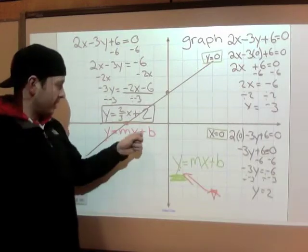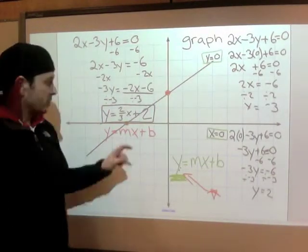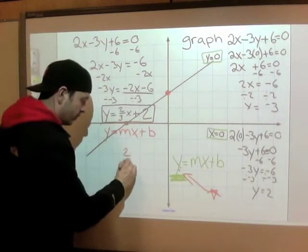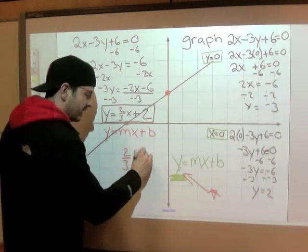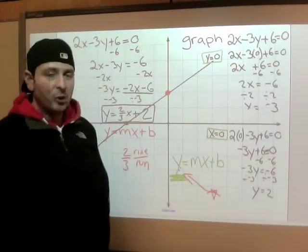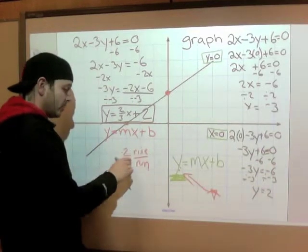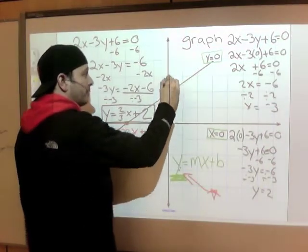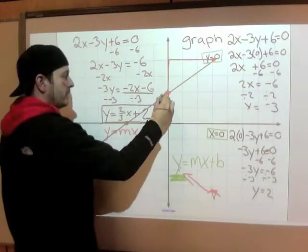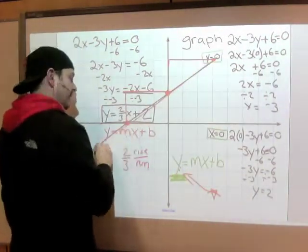And this is in our form that we like. So our intercept is 2 — our slope is 2 thirds — rise over run. Rise is 2, run is 3. So from this point it's going up 2 over 3. Going backwards, it's going over 3, down 2. Connect that line.